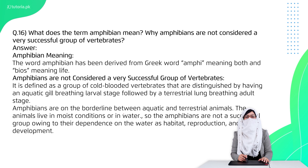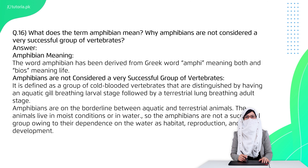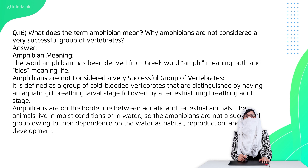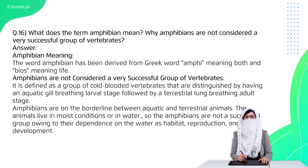Question 16 is: what does the term amphibian mean, and why are amphibians not considered a very successful group of vertebrates? Amphibian means an organism that can live both on land and in water. They are not considered very successful because they require water for reproduction and survival in hot environments, and they are not found everywhere.